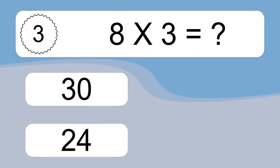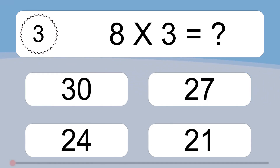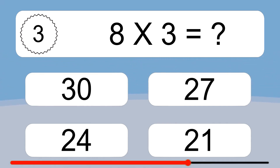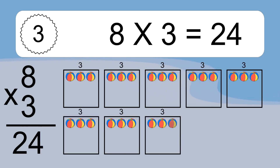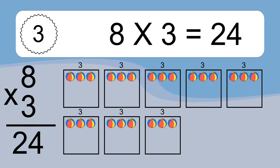8 times 3 equals what? 8 times 3 equals 24. We have 8 boxes, and each box has 3 colorful balls inside. If you count all the balls in all the boxes together, you will have 8 times 3 balls. This equals 24 balls.